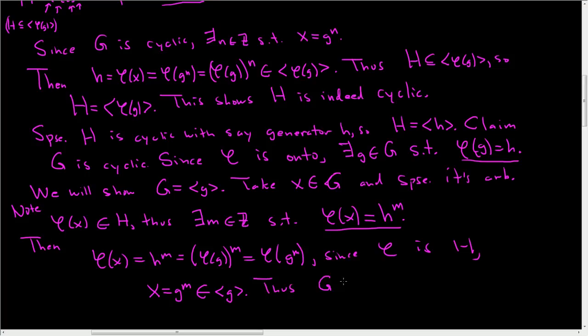Thus, G is contained in the cyclic group generated by little g whence it's equal to the group generated by little g. And this shows G is cyclic. So I thought that direction was a little harder. I actually hadn't done this problem in a long time. So I was working it out and trying to write and think at the same time. But I hope this helps.